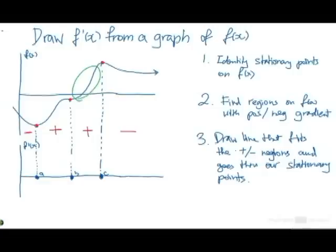So, left of A, we see that the gradient is negative, right? But it's increasing and hits 0 at A. So, we're going to do this.